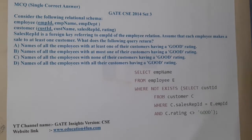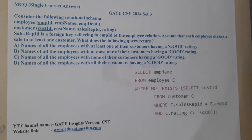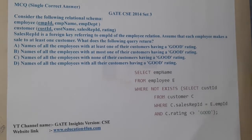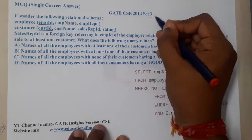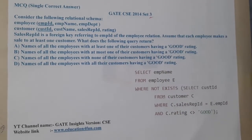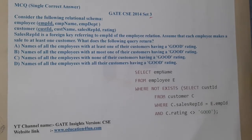Hello guys, we are back with our next lecture. In this lecture let us go through the next question. This question belongs to GATE CSC 2014 Set 3. The given question says: consider the following relational schema.